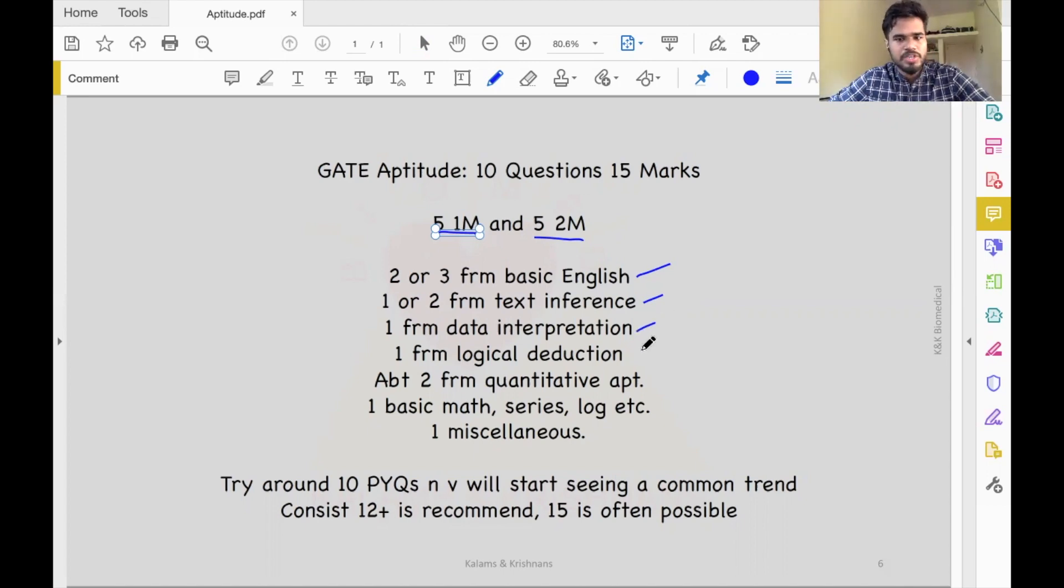Then there is one logical deduction question. For example, they can specify 3-4 names and mention some relationships between them, then ask how person A is related to person B. The relations will be somewhat complicated - you might need to draw a family tree, but you will be able to detect the relationship. There is usually one question from logical deduction - blood relations, seating arrangement, things like that.